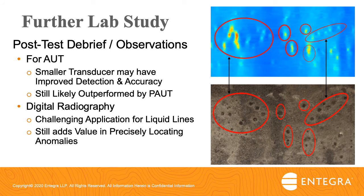Following the conclusion of the laboratory study comparing the MFL and in-the-ditch techniques, a couple of additional observations were made. First, for the AUT system, a smaller transducer may have helped improve the detection and accuracy results. Nonetheless, AUT would have still likely been outperformed by the phased array UT system. As it relates to digital radiography, obviously it would be a much more challenging application for liquid lines. It would not be able to use digital radiography for sizing of internal pinholes, but it would still add the value of precisely locating the anomalies for use in conjunction with other in-the-ditch techniques.